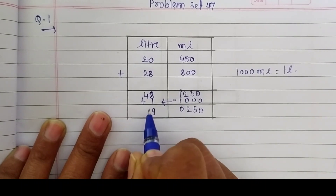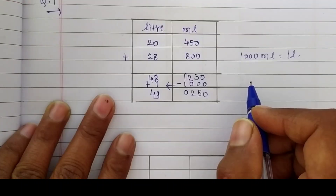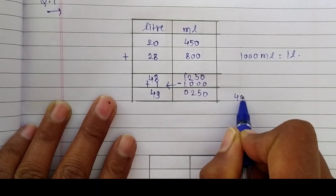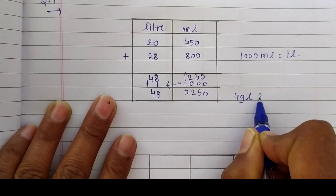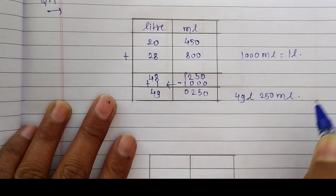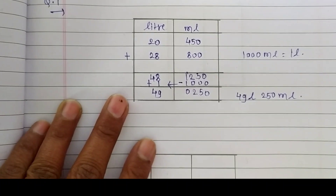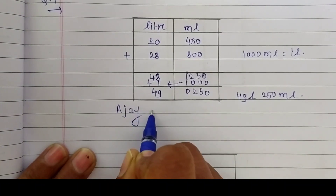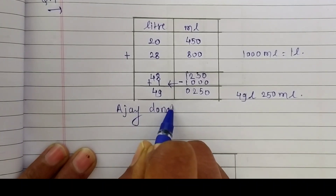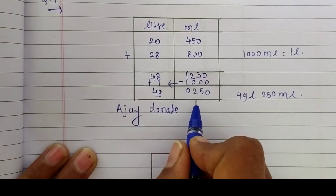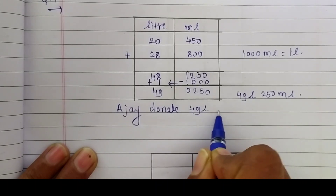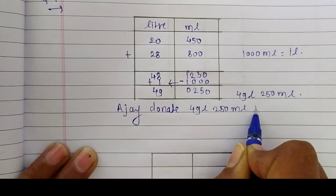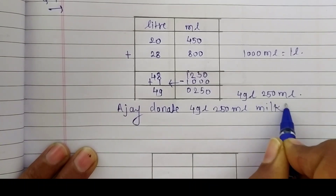Adding the carried 1 liter: 48 plus 1 equals 49. The total donation of Ajay was 49 liters and 250 milliliters. Ajay donated 49 liters and 250 milliliters of milk in total.